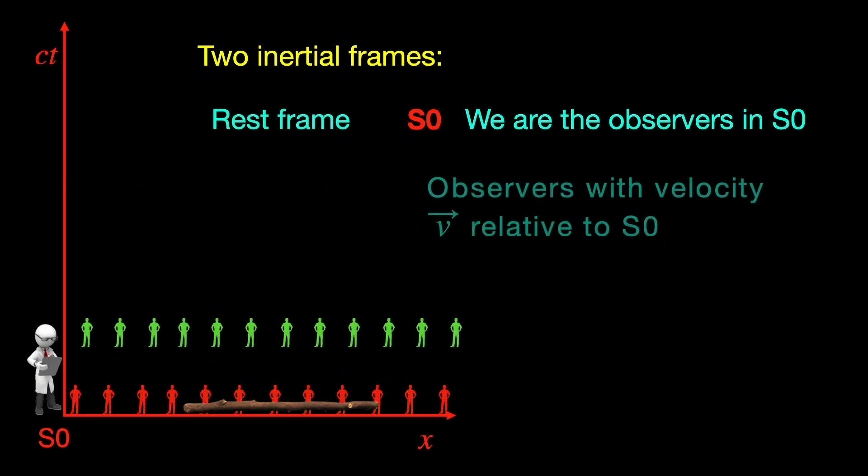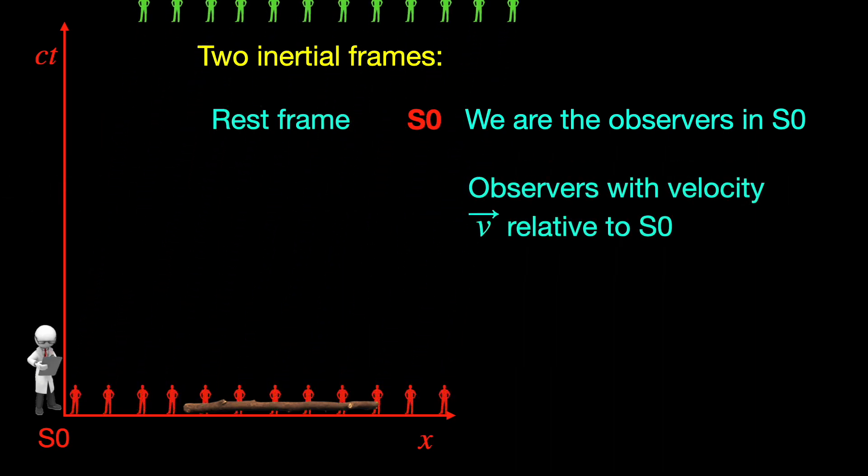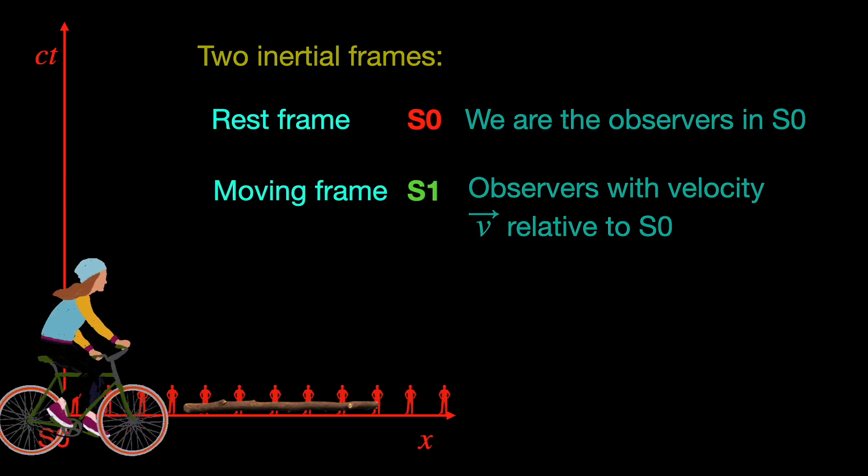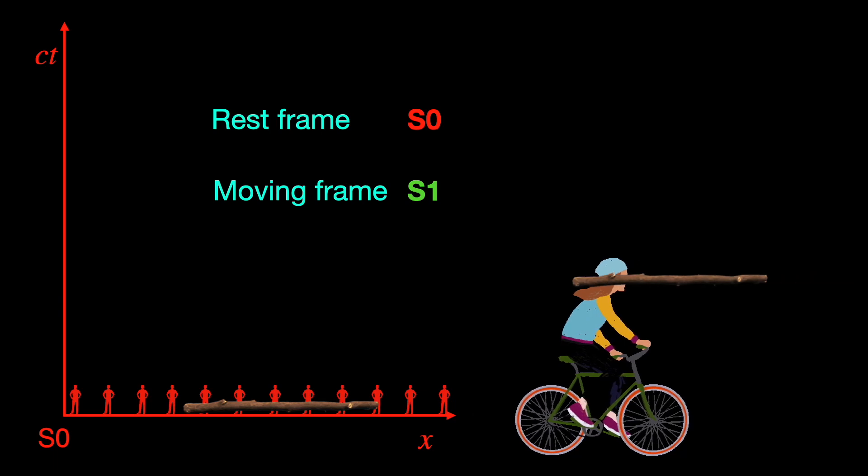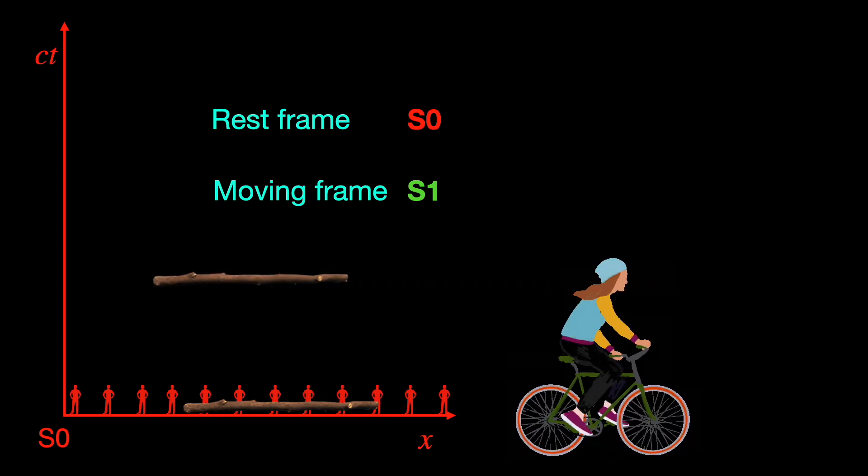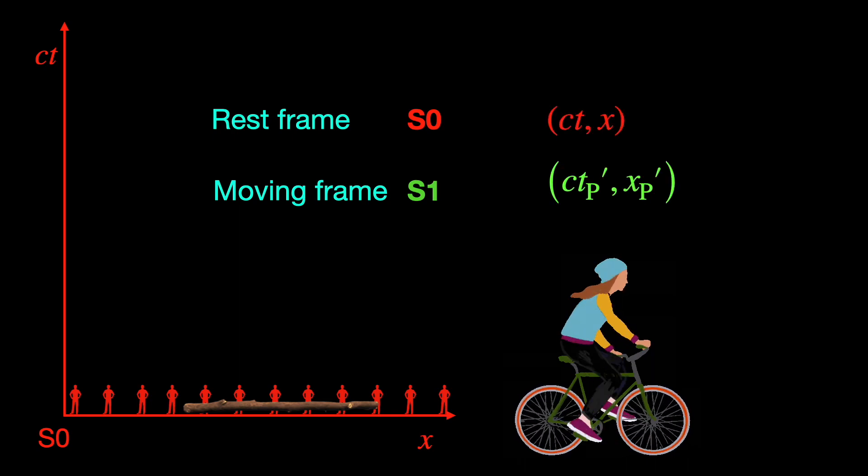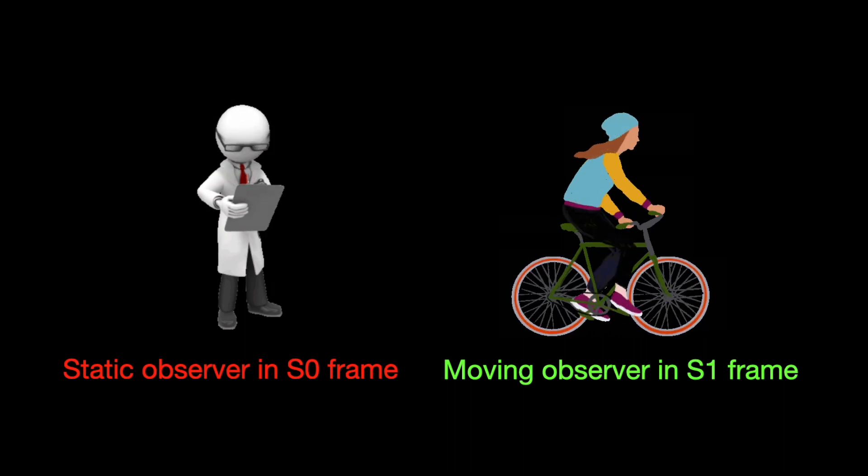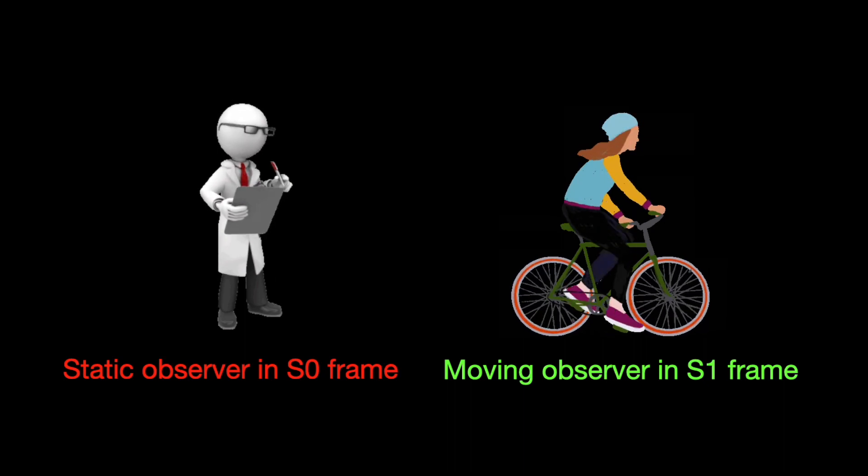Then there are observers moving uniformly with speed V relative to our frame S0. So from their frame, say S1, also inertial, this stick appears to be moving with the same relative speed V but in the opposite direction. Both inertial frames will have space-time coordinate systems of their own and the observers in these two frames will measure the length of the stick using their respective coordinates.